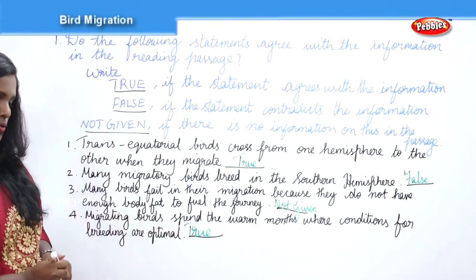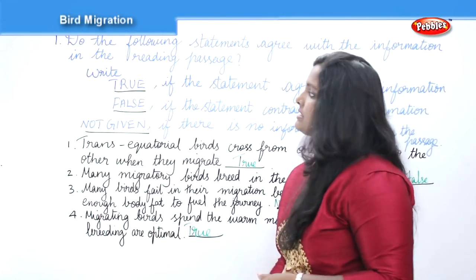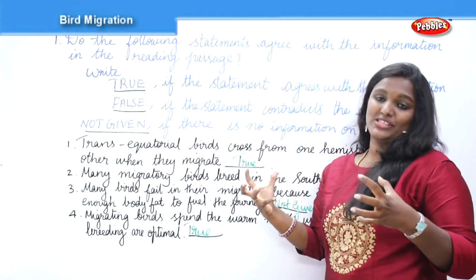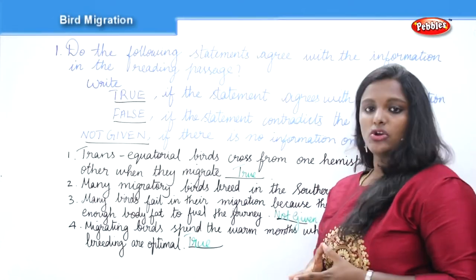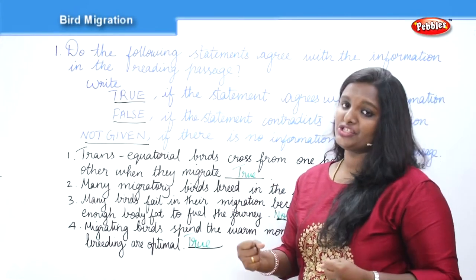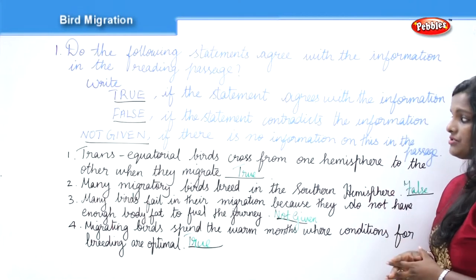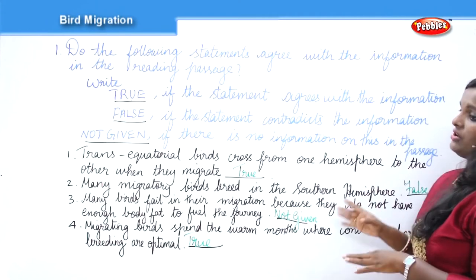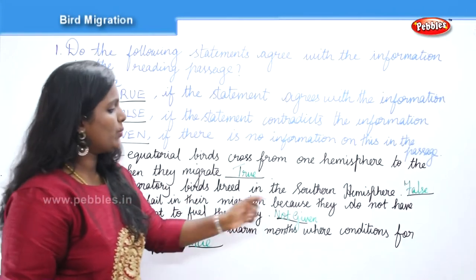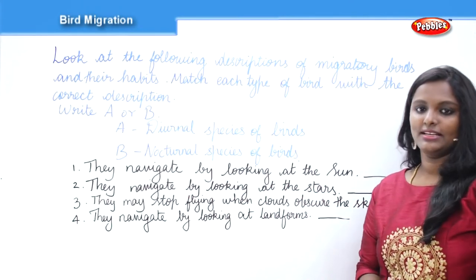This is a common type of question asked in the reading exercise. You are given a passage followed by various kinds of questions. For the true/false/not given question type, you need to read the passage very carefully: write TRUE if the statement agrees, FALSE if it contradicts, and NOT GIVEN if there is no sufficient information about that particular statement in the passage.